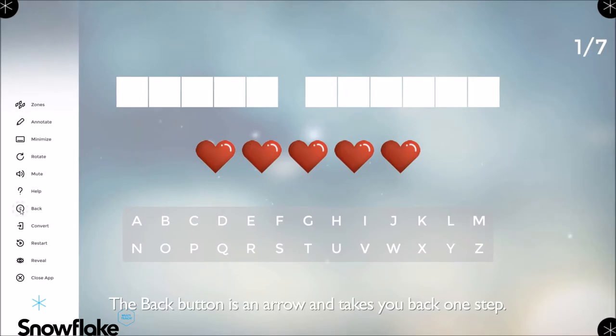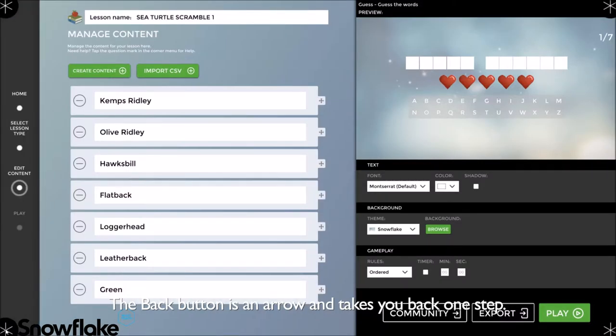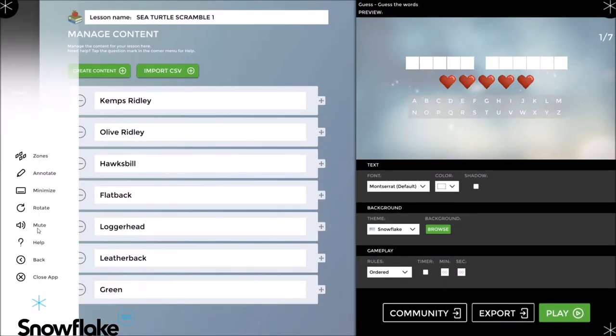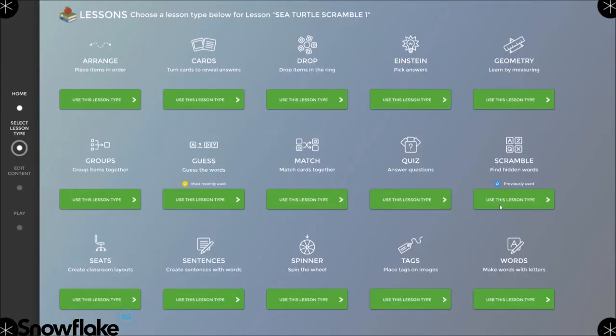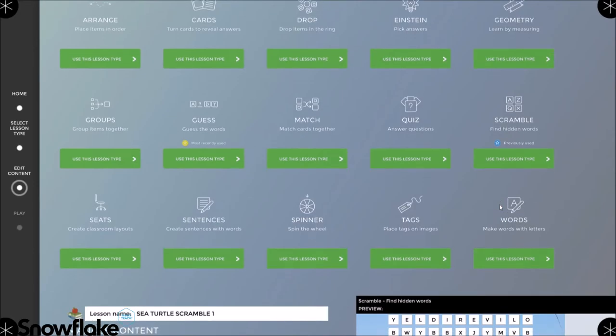The back button is an arrow, and it takes you back to the previous step in the lesson creation or presentation process. In this case, it takes us back to scramble.